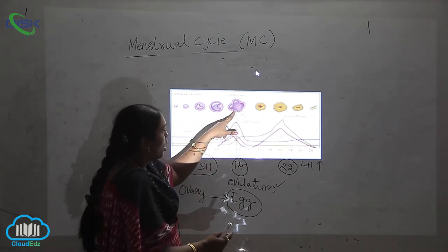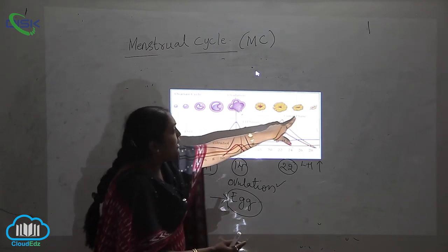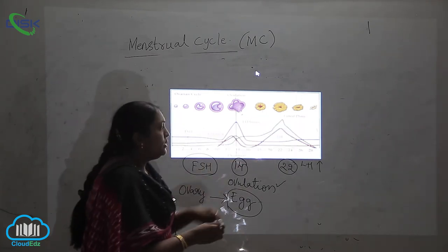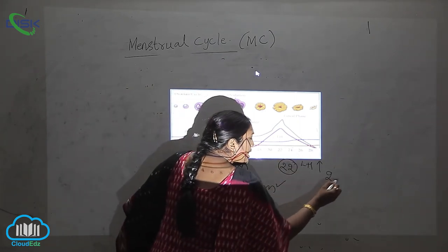When the follicle here, see how much big it is there, it is growing smaller and reducing. On the 28th day what is happening?